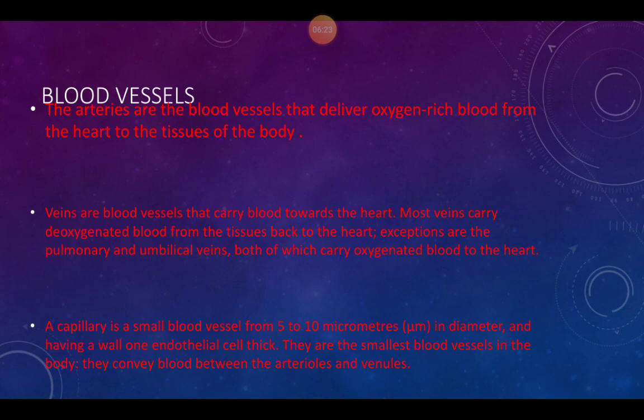Blood vessels are like tubes that carry blood. There are three types: arteries, veins, and capillaries. Arteries are the blood vessels that deliver oxygen-rich blood from the heart to the tissues of the body. They have thick walls and a small lumen because the blood from the heart is under a lot of pressure.